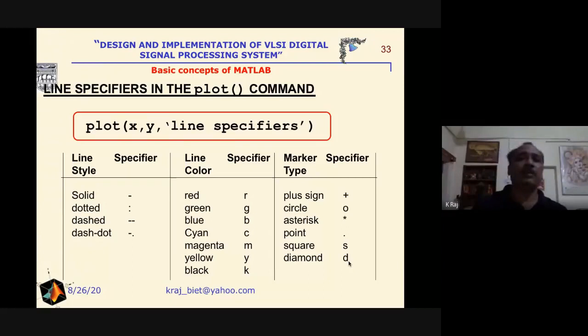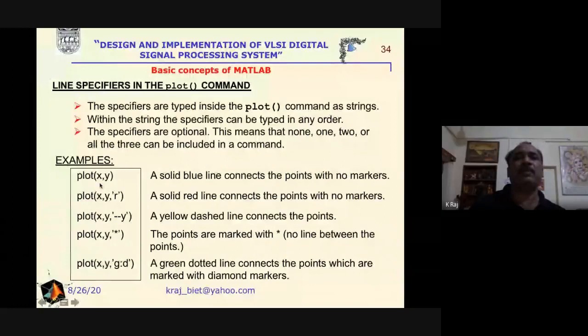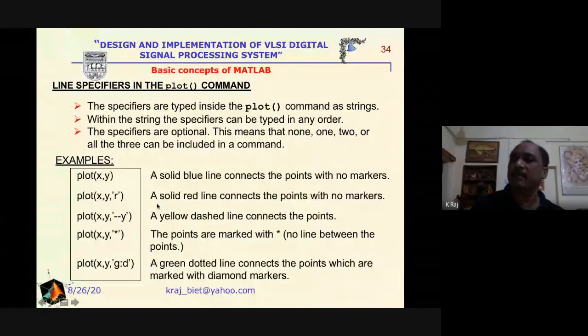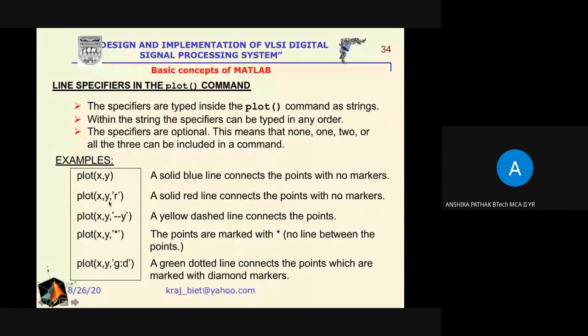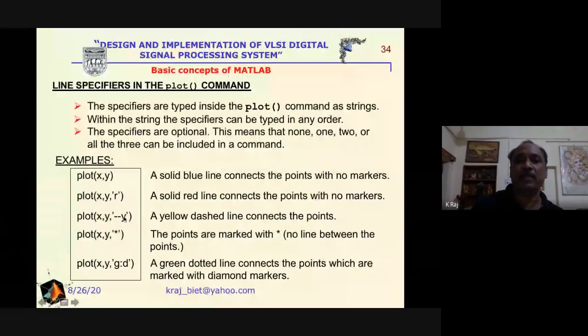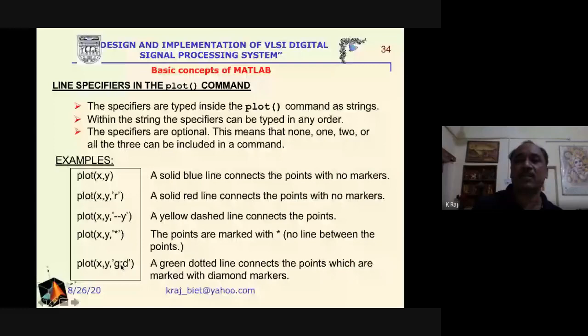Examples: plot(x, y) gives a blue solid line with no marker. Writing plot(x, y, 'r') gives a red solid line with no marker. Writing plot(x, y, '--y') gives a yellow dashed line. Writing plot(x, y, '*') uses asterisk markers. Writing plot(x, y, 'g:d') gives a green dotted line with diamond markers.